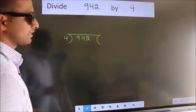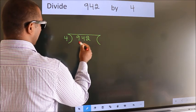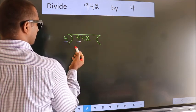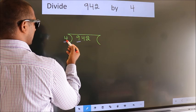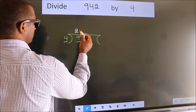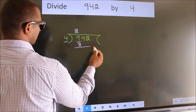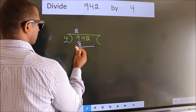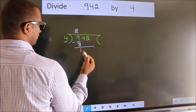Next, here we have 9, here 4. A number close to 9 in 4 table is 4 twos, 8. Now we should subtract. We get 1.